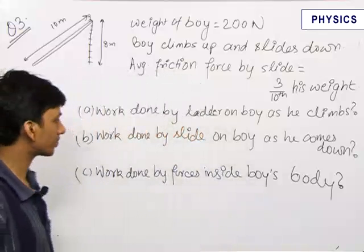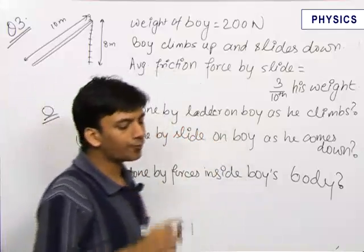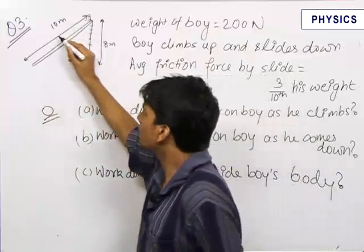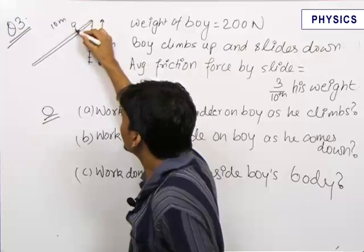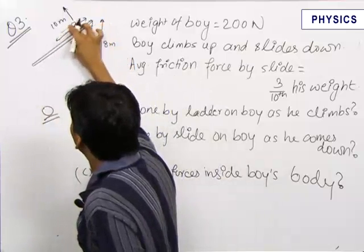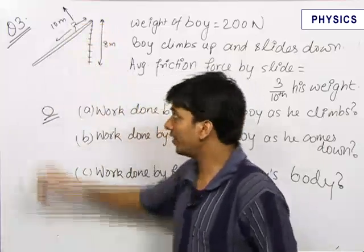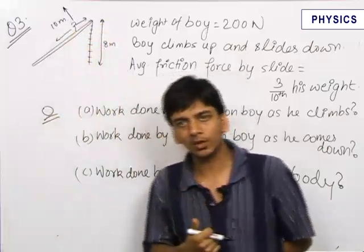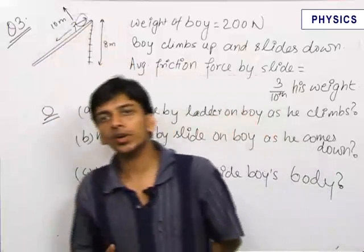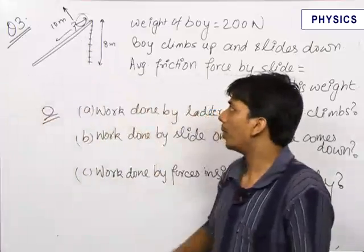Now the second part: work done by the slide on the boy as he comes down. The force exerted by the slide on the boy is of two types — one is the normal force and the other is the friction force. The displacement of the boy is along the slide direction, but the forces act in two directions. The contribution of the normal force to work done is zero, because its component along the displacement comes out to be zero. Therefore, the only contribution to work done by the slide comes from the friction force.